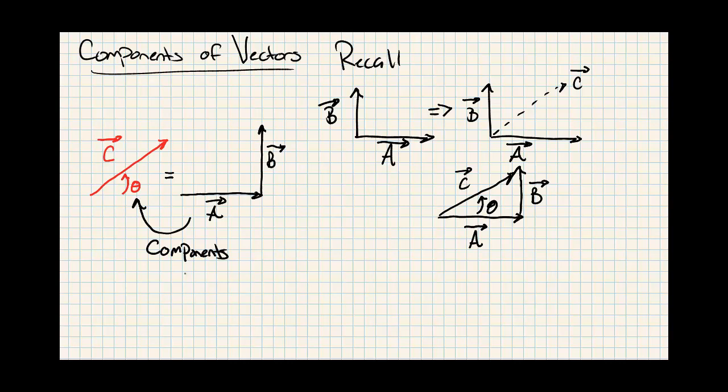The components of C, or parts, where A would be the same as our C vector in the x direction. This is the x portion of C. And B is C in the y direction. So that's the y portion of C.